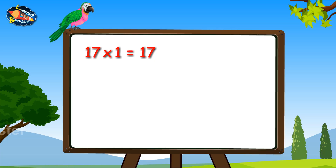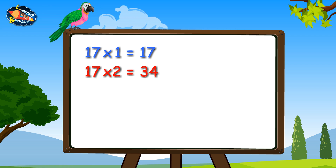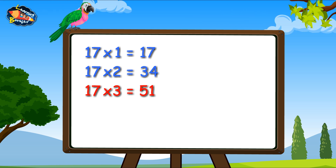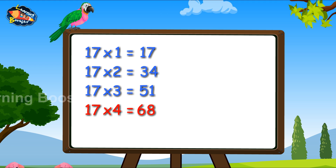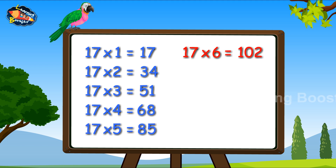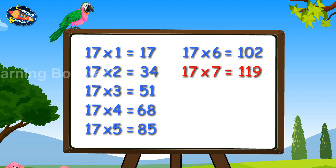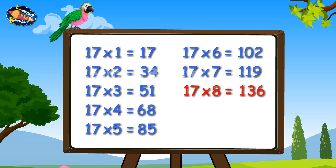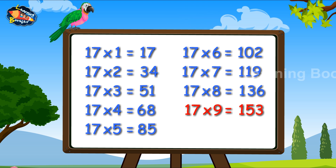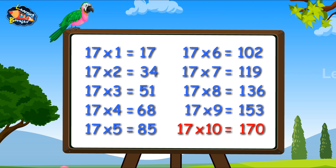Seventeen ones are seventeen. Seventeen twos are thirty-four. Seventeen threes are fifty-one. Seventeen fours are sixty-eight. Seventeen fives are eighty-five. 17-6s are 102. 17-7s are 119. 17-8s are 136. 17-9s are 153. 17-10s are 170.